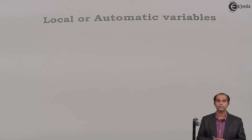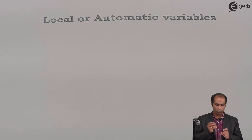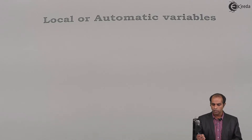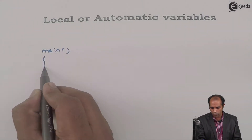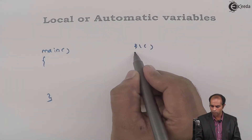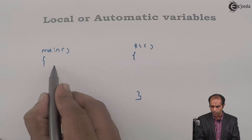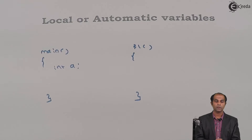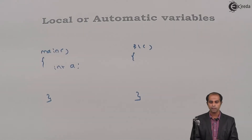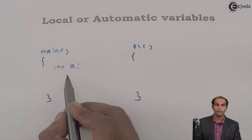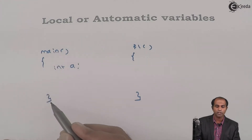Let's first understand what exactly is meant by a local variable. Assume I have a main function and a function called f1. In main, I declare a variable as int a. Now answer this: when I say int a, this variable a is used within this particular main.